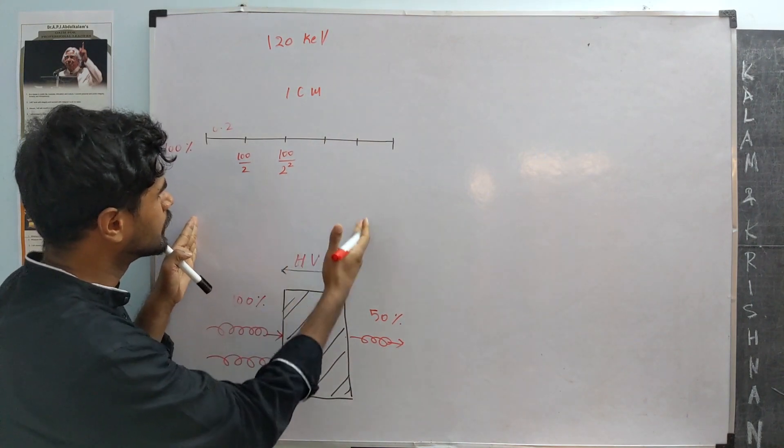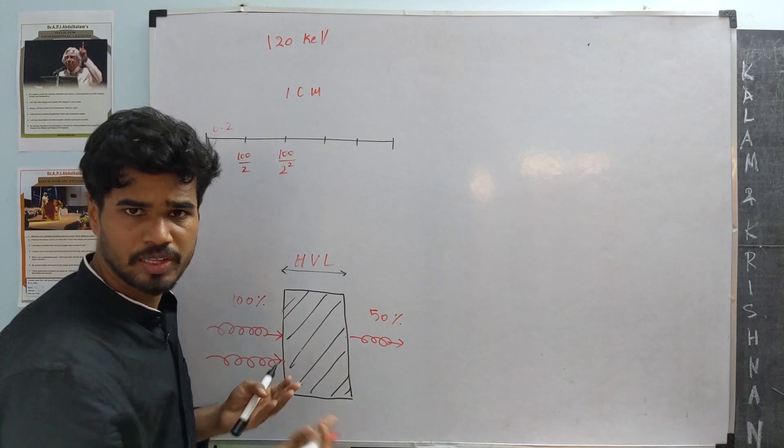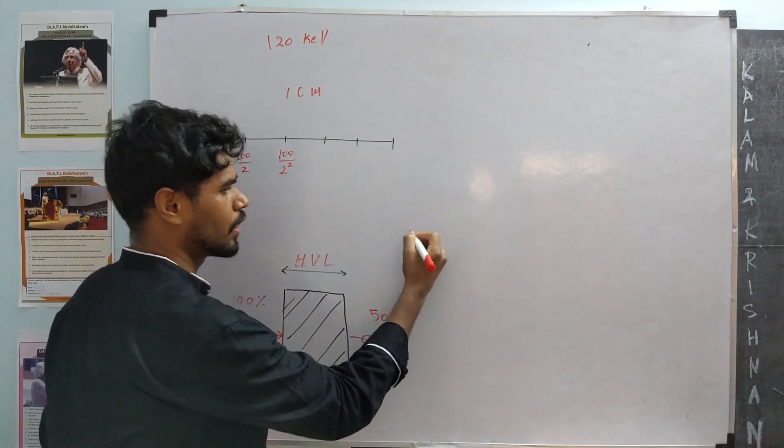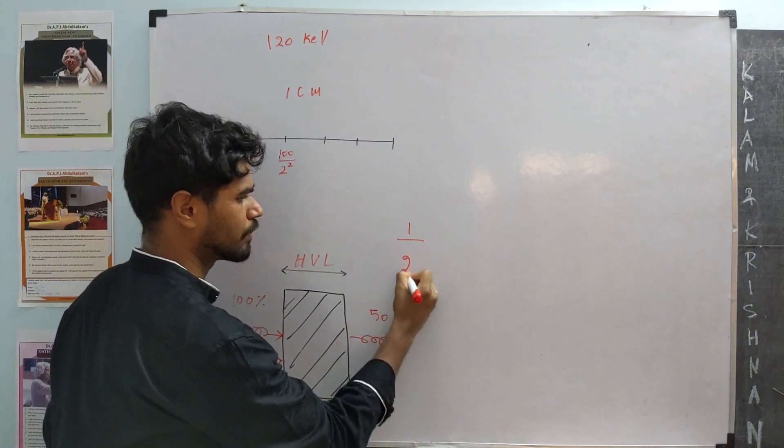If the photons enter n number of half-layers, what will be the drop? It will be 1 by 2 power n.